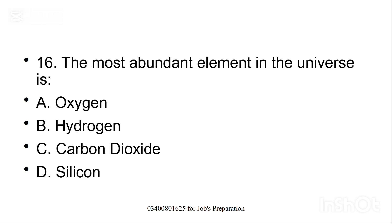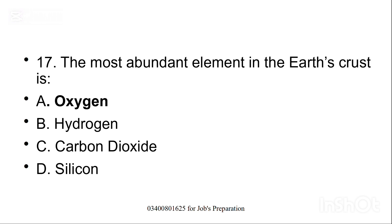The most abundant element in the universe is, most abundant meaning is something that is in great amount. So option B is the correct option. The most abundant element in the Earth's crust is, option A, oxygen is the correct answer.